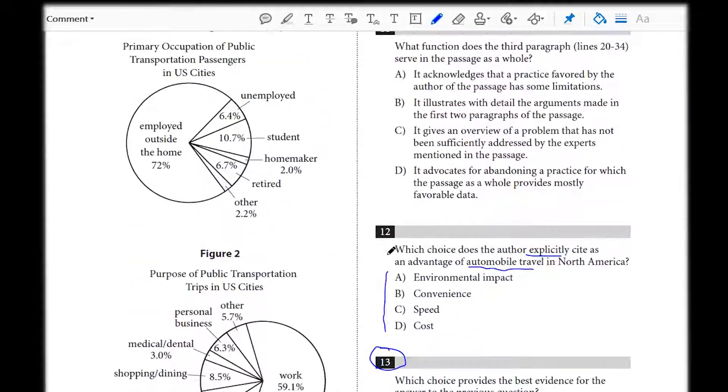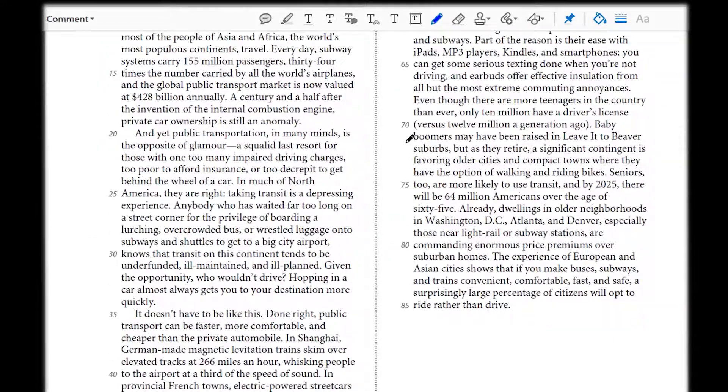Choice B says 20 through 24. Let's go look at those. Here we are. Public transportation is the opposite of glamour. Okay, so we're not speaking towards the automobile just yet, but let's see where it goes.